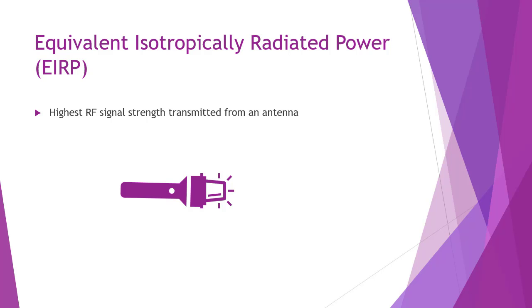In this module, we talked about the units of RF measurement, RF mathematics, SNR, noise floor, RSSI, and EIRP. And then we looked at the 10s and 3s rule to plan a wireless network. I hope you understood all the concepts, and I will see you in the next module.